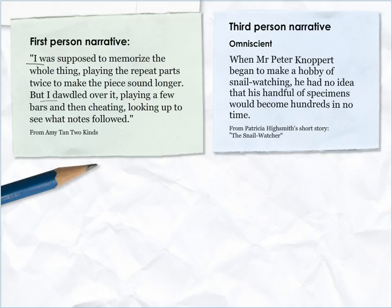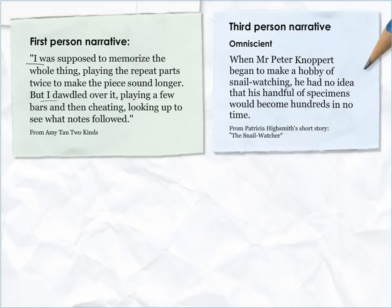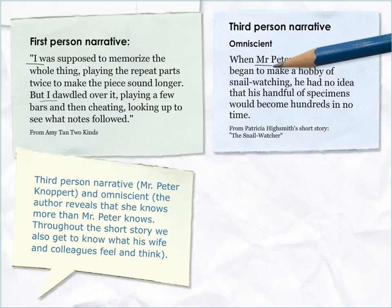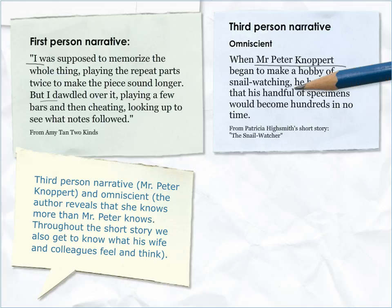Third person narrative — omniscient example: 'When Mr Peter Knoppett began to make a hobby of snail watching, he had no idea that his handful of specimens would become hundreds in no time.' This is omniscient: the author reveals that she knows more than Mr Peter knows, and throughout the short story we also get to know what his wife and colleagues feel and think.